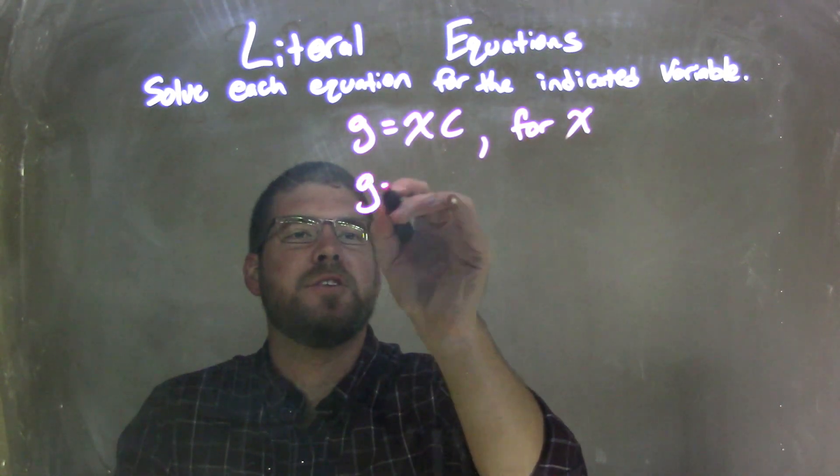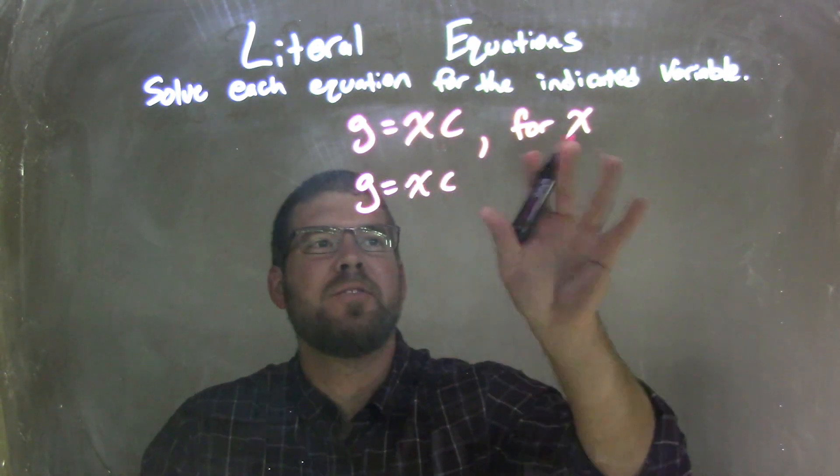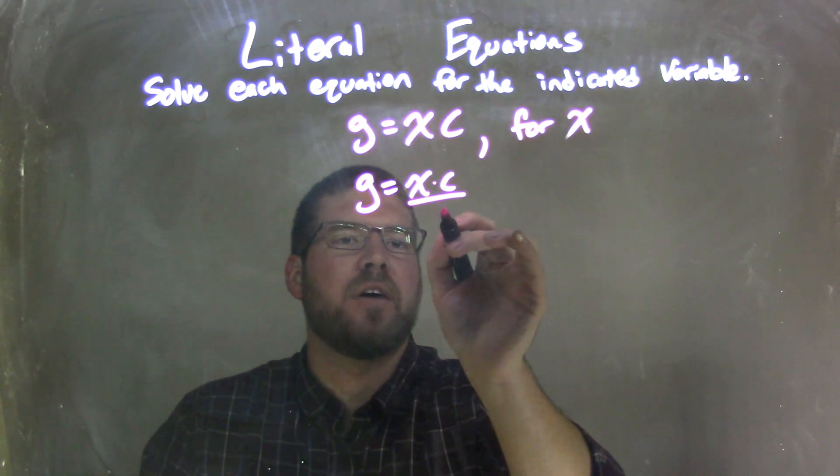I'm going to rewrite my equation: g equals xc, x times c. What I need to do is get x by itself, so there's multiplication going on between the x and the c, our cross country.